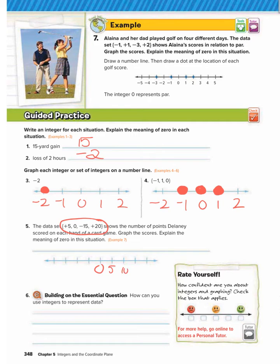So I'm going to do zero, five, 10, 15, 20, and then negative five, negative 10, negative 15, and negative 20. So I would graph zero by putting a dot at zero. I'm going to graph positive five by putting a dot at positive five. Graph negative 15 by putting a dot at negative 15. Lastly, graph positive 20 by putting a dot at positive 20.